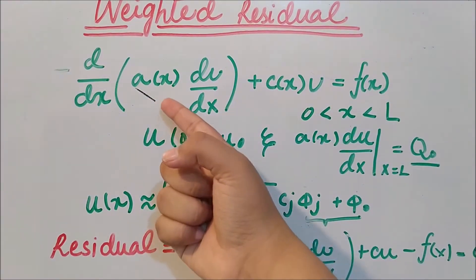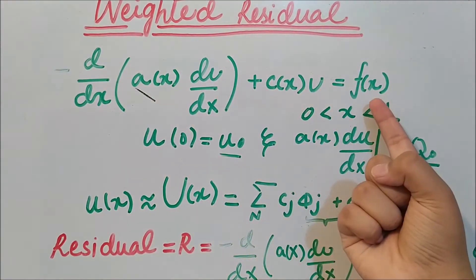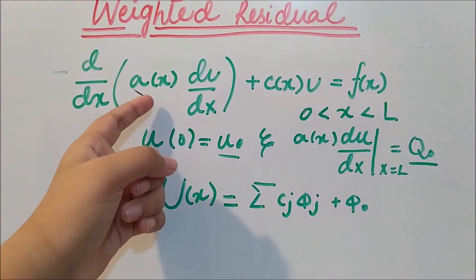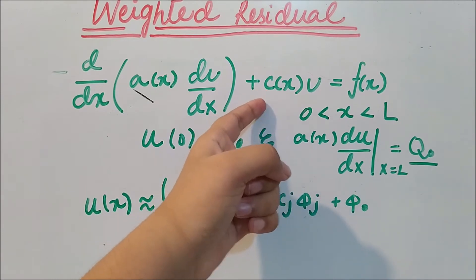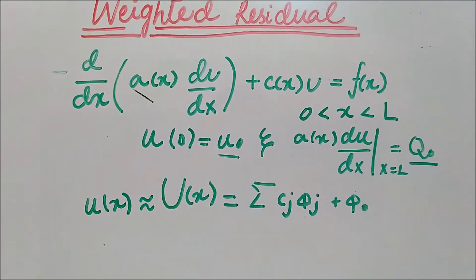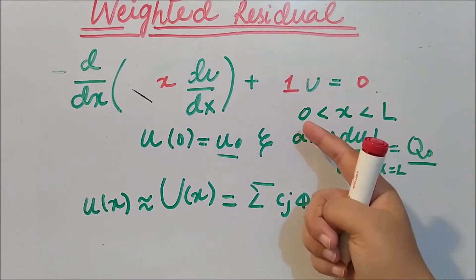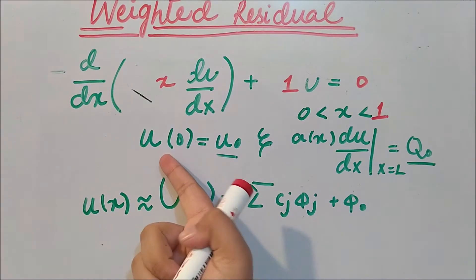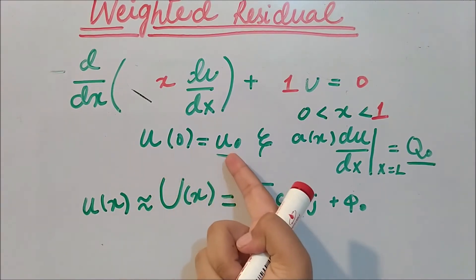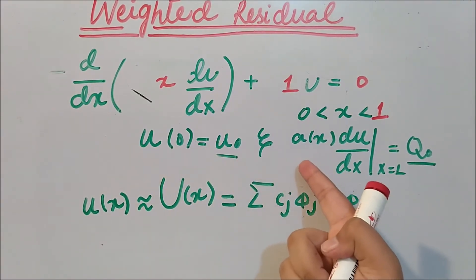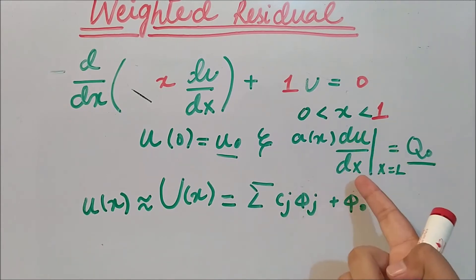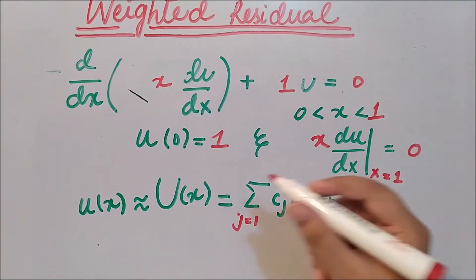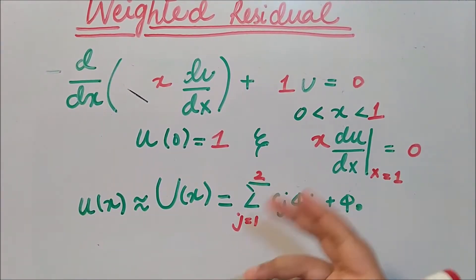Let's specify the functions and the domain. We have a(x) = x, c(x) = 1, and f(x) = 0, with the domain from 0 to 1. The boundary values are u(0) = 1 and x·(du/dx) at x = 1 equals 0. The number of elements is N = 2.